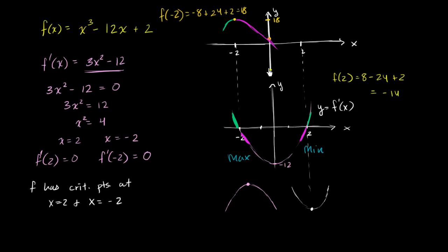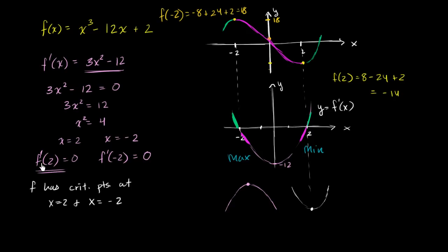The slope is negative as we approach x equals 2, so our function is decreasing as we approach it. Right there the slope is 0, and then the slope becomes positive — the function is increasing after that. So this is our sketch of f of x. We identified x equals 2 as a minimum point and x equals negative 2 as a maximum point.